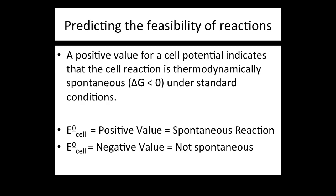We can use the standard cell potential to predict whether a reaction is feasible. A positive value for the cell potential indicates that the cell reaction is thermodynamically spontaneous, i.e. ΔG is negative under standard conditions — as in the copper-zinc reaction with plus 1.10 volts. If the standard cell potential calculated is negative, then the reaction will not happen; it is not spontaneous and ΔG is positive.